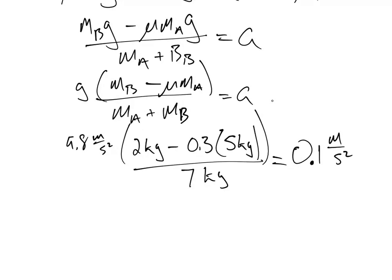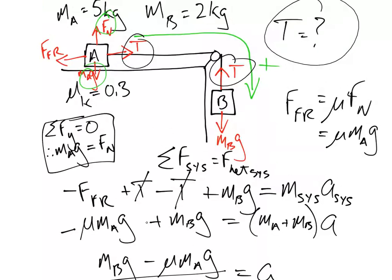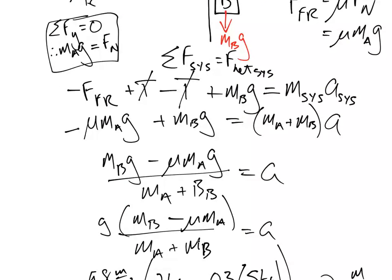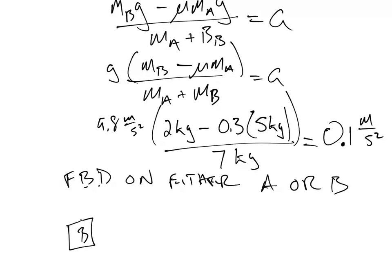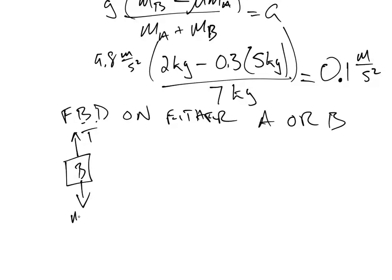So now if we want to solve for T, we have to do now a free body diagram on either A or B. So, you know, if we come up here and we look at A or B, well, which one's more difficult? If we look at A, A's got force of friction and right there, and it's got tension right there. So that's two forces we have to deal with. B has tension and gravity. That's two forces we have to deal with as well. Basically, in either case, it's going to be the same amount of work. So I'm just going to pick B for simplicity. You will get the same answer if you've done everything correctly.